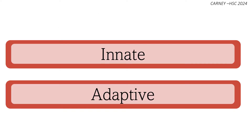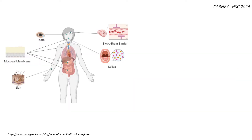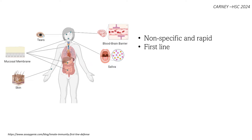Let's first look at the innate response. The innate immune response encompasses the first and second lines of defence. It is rapid and non-specific to the pathogen entering the body. The first line of defence is a collection of physical and chemical barriers that act to prevent pathogens from entering the body or to quickly eliminate them if they do gain entry.